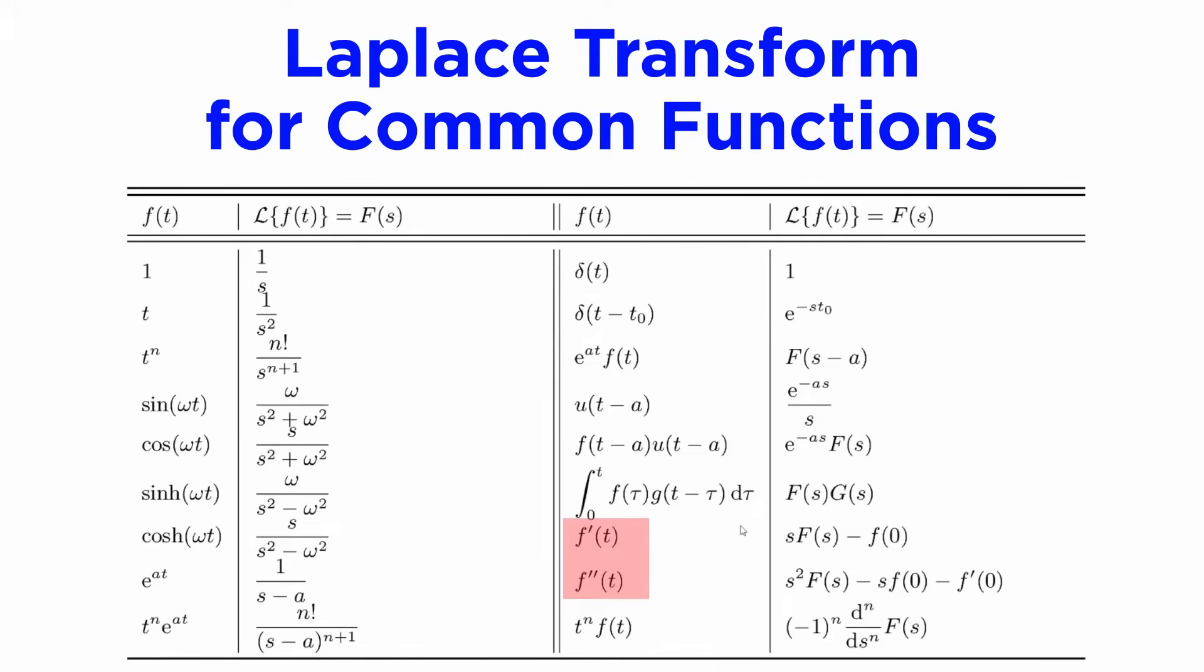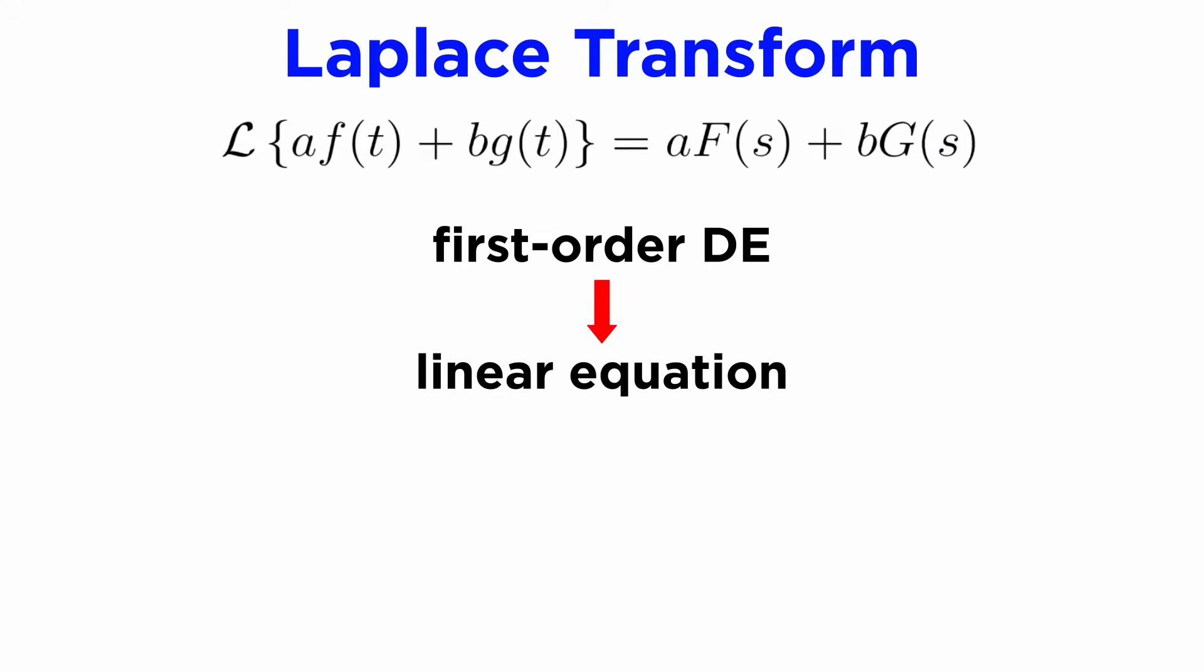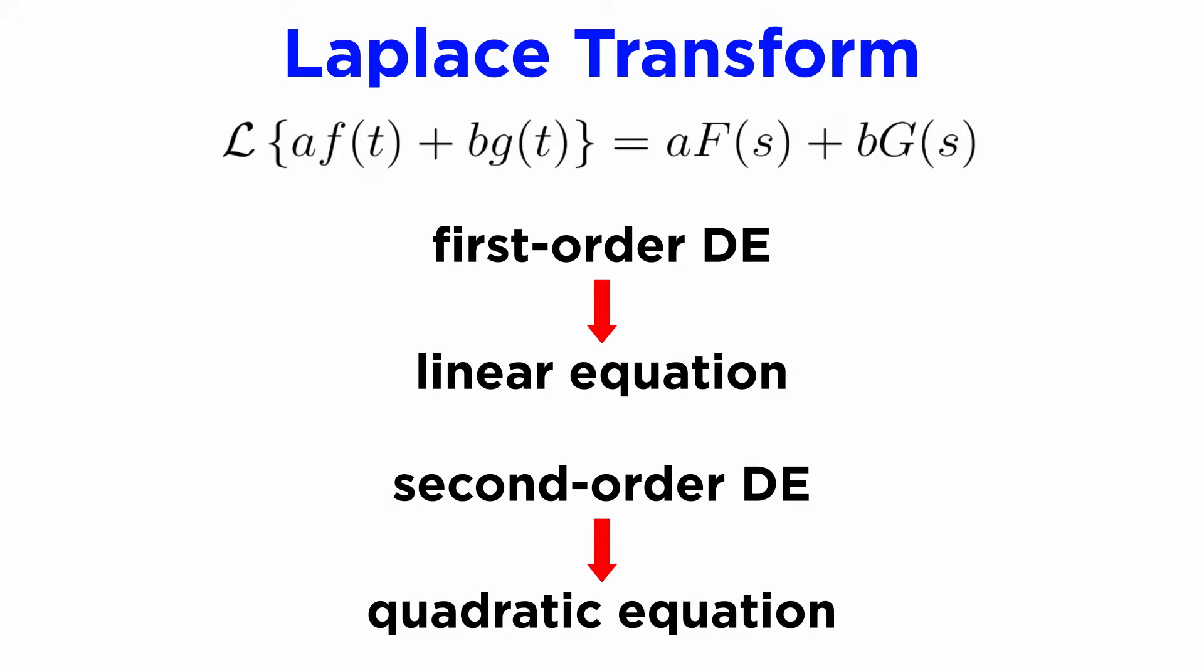Most important for now are the transforms of the first and second derivatives of f of t, shown in the bottom right of the table, where derivatives in t are converted to polynomials in s. This essentially means that first order DEs will become linear equations, second order DEs will become quadratic equations, and so forth.